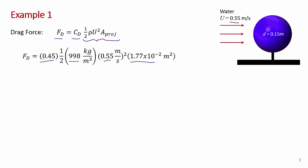Checking units: velocity squared gives meters squared per second squared; multiplied by kg/m³ and m² gives kg·m/s², which is a newton. Multiplying everything out, the drag force is 1.2 kg·m/s² which equals 1.2 newtons. This is a relatively small force, but the velocity is low and the sphere is small.